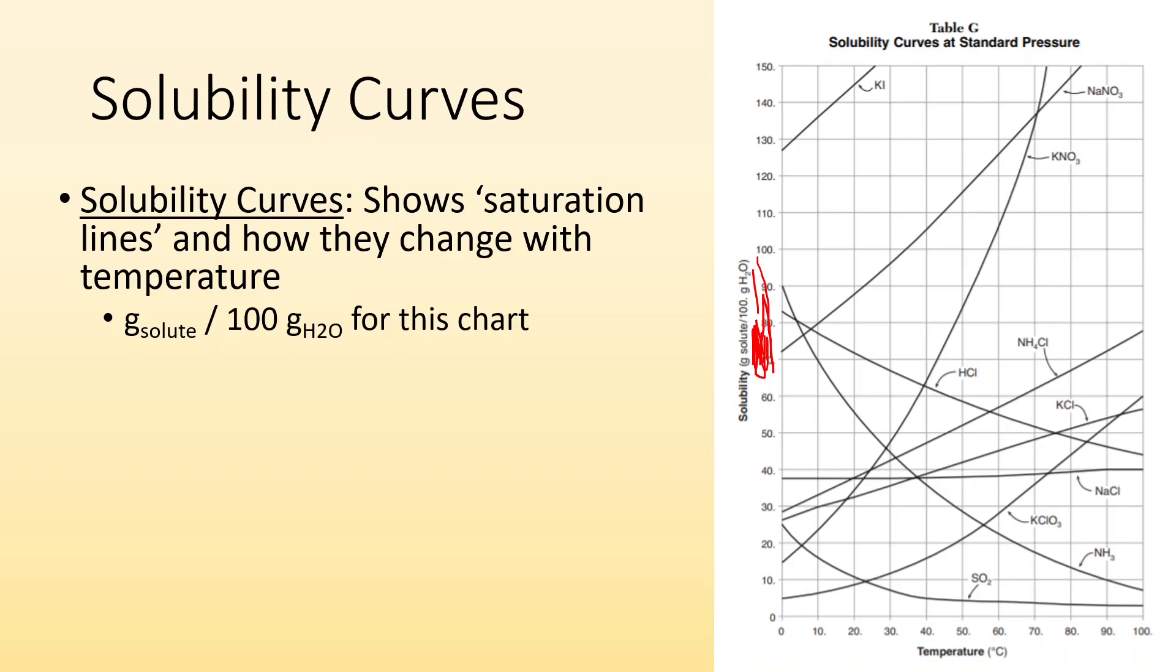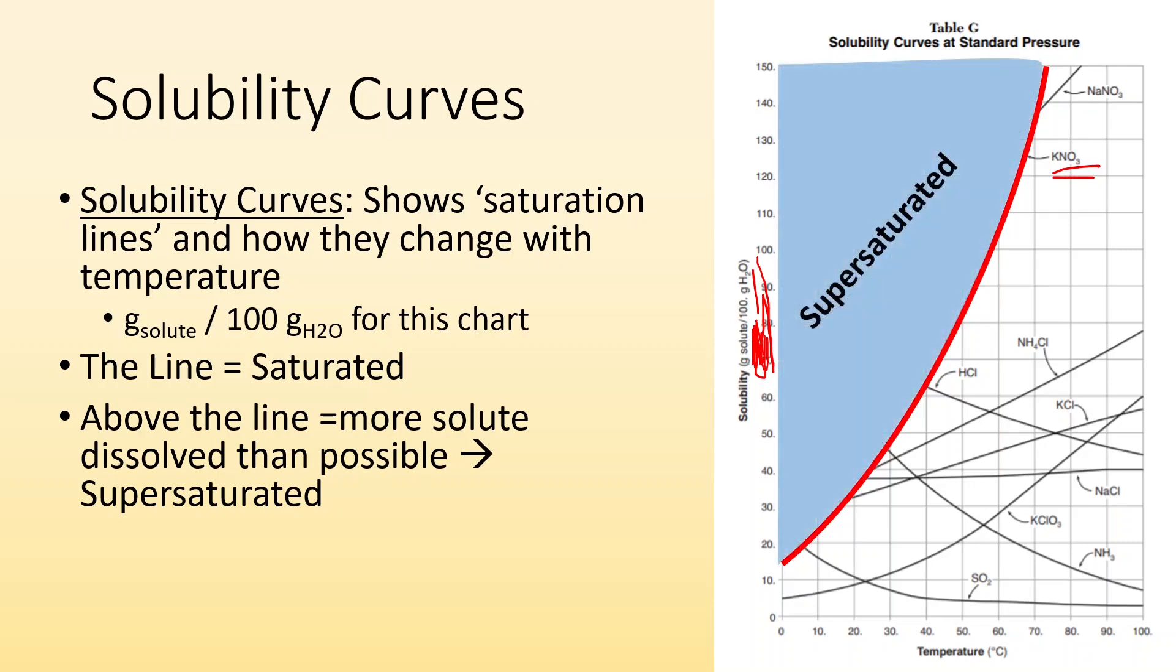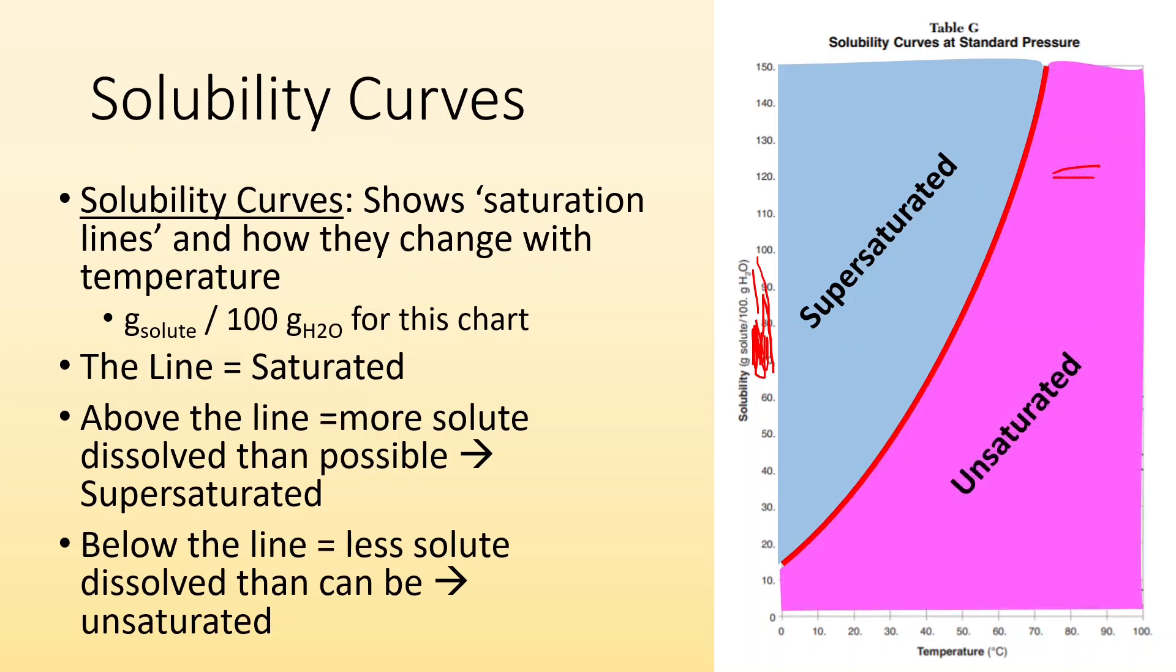All right. If we're looking at the line itself, that's where it is saturated. So if I'm focusing on KNO3 and this line right there, that line is where a saturated solution exists. If you're above the line, that means somehow you've dissolved more solute than you should be able to. That is going to be supersaturated. And below the line means that you can still dissolve more solute, which means it's unsaturated. So above the line, supersaturated. Below the line, unsaturated. Right on the line, saturated.